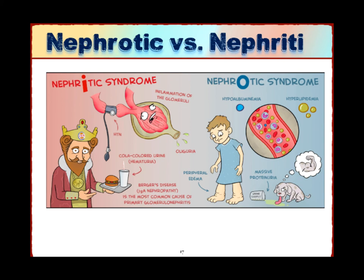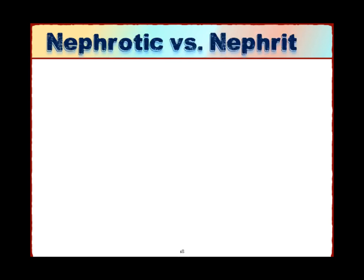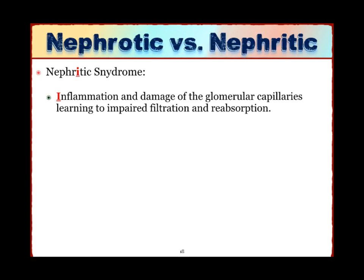Now we will talk about two syndromes that affect the internal structure of the kidneys: nephritic syndrome and nephrotic syndrome. Nephritic syndrome results from inflammation. Nephrotic syndrome involves severe loss of protein. Let's talk about each one. Nephritic syndrome results from inflammation caused by secondary or primary infection within the kidneys.